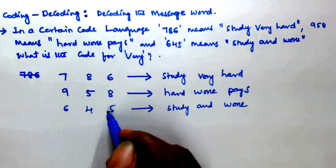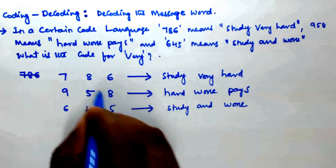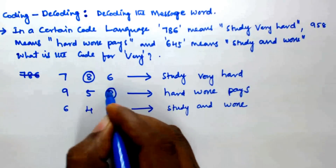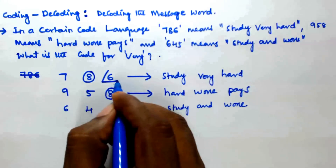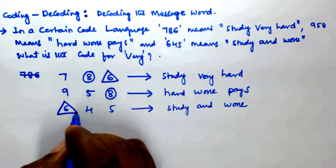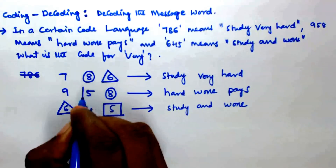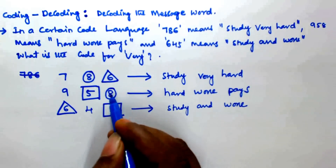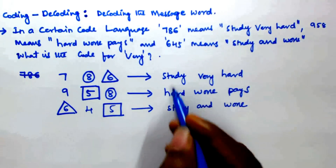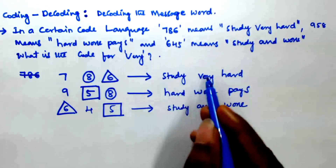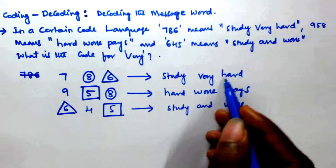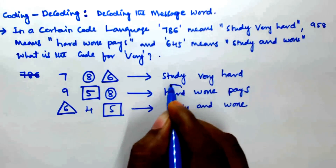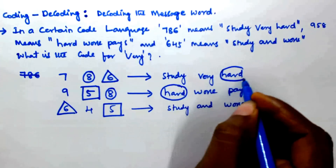Wherever you can find common numbers, give them a distinct symbol. The number eight appears in the first message and in the second message. The common word between 'study very hard' and 'hard work pace' is 'hard'. So eight corresponds to 'hard' — circle it.